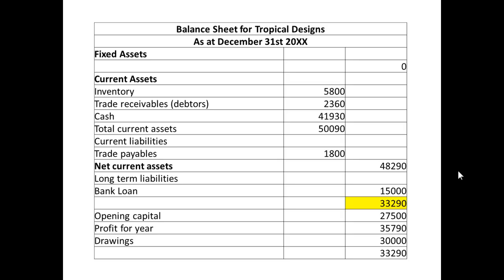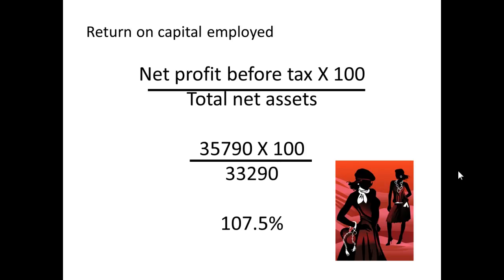And on the balance sheet for Tropical Designs, I've again highlighted the net assets figure, and that is £33,290. So the return on capital employed is the net profit before tax times 100 over the total net assets: £35,790 times 100 over £33,290, which gives 107.5%. This is a somewhat unusual case, as we'll see in a minute.